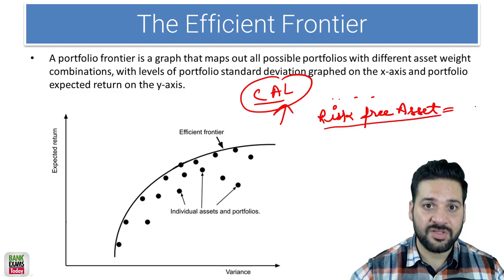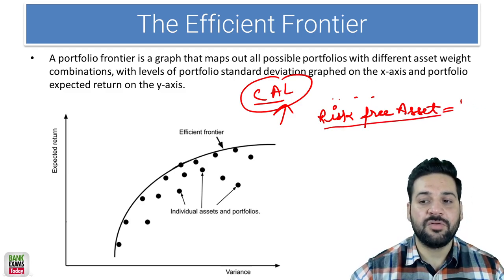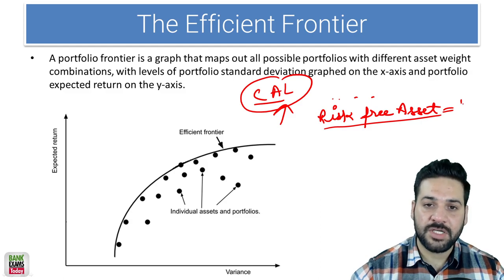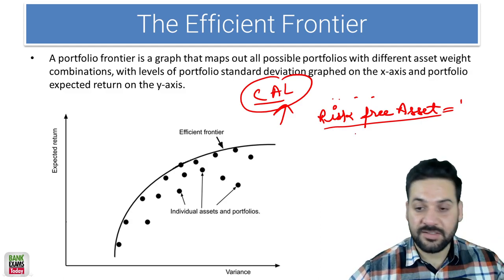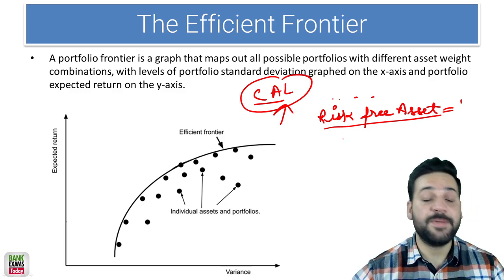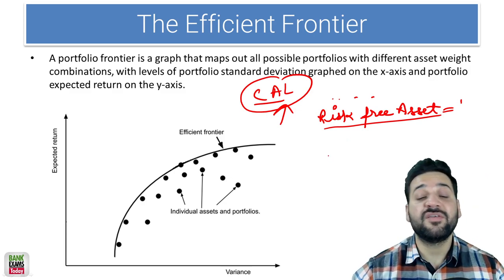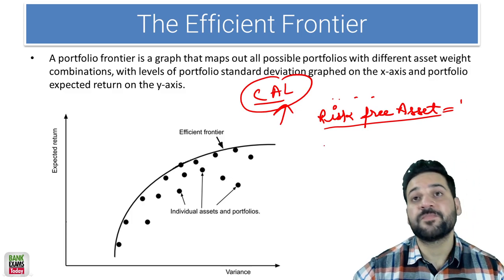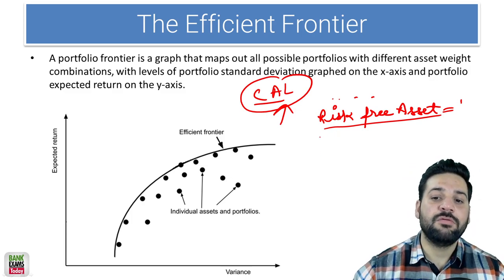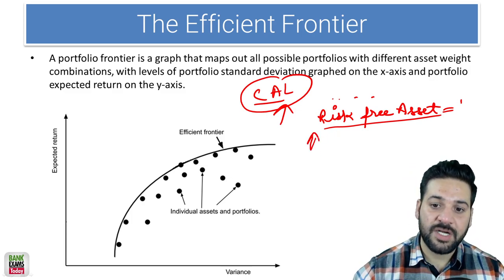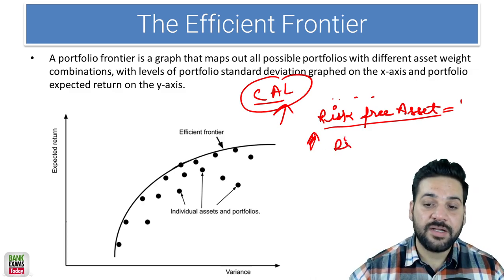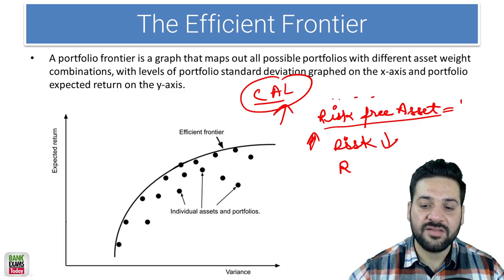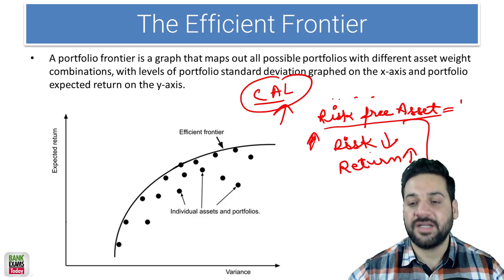The risk on the risk-free asset is zero and the return that you are going to get would be minimum. While on other assets like equity, debentures, or fixed deposits of the bank, you can get more returns. But what we are targeting as an investor — what is our goal? To get the lowest risk and get the highest return. So that is what we are targeting.